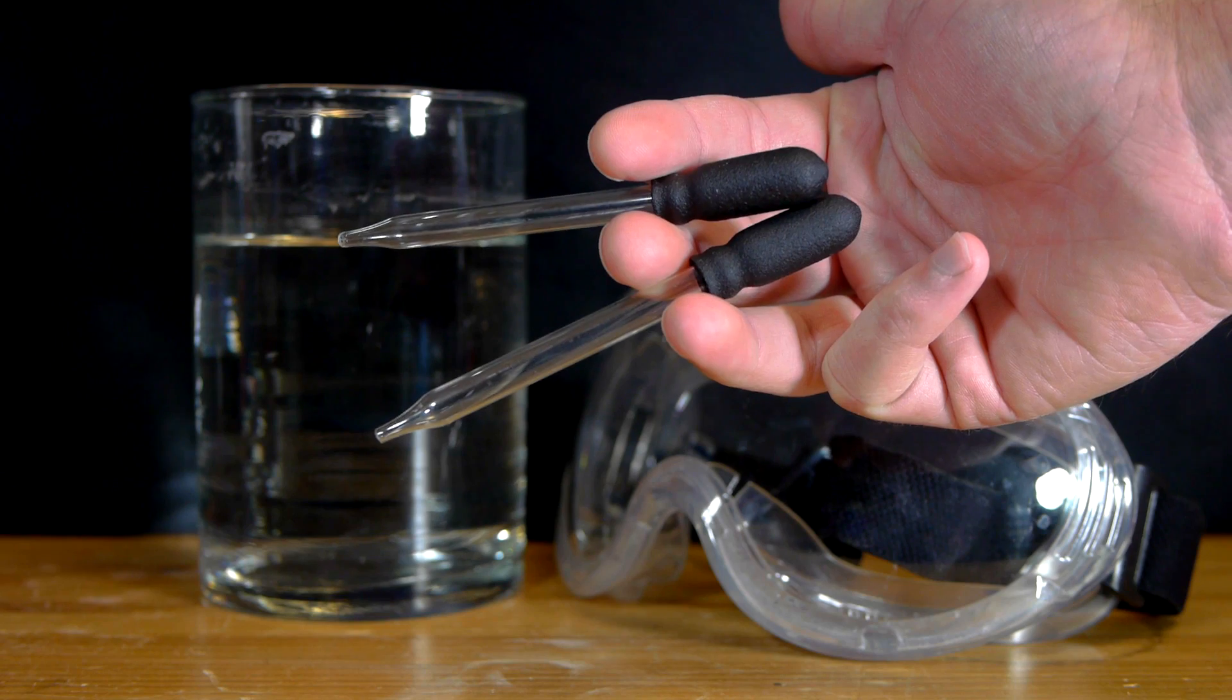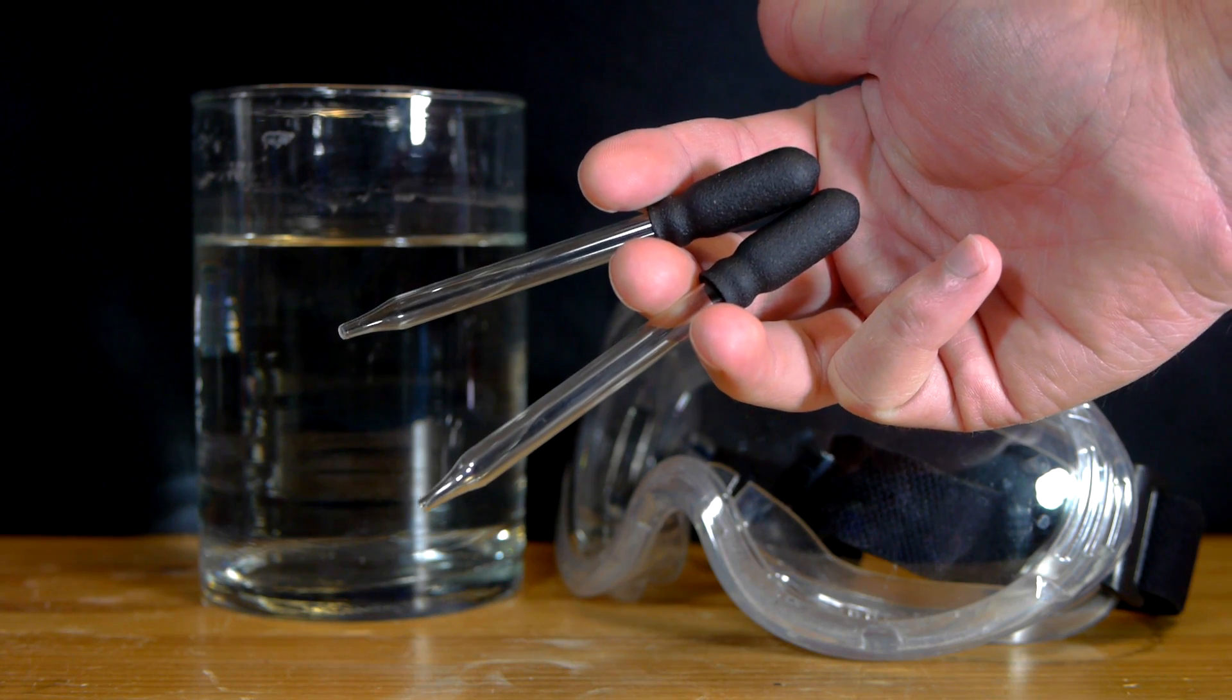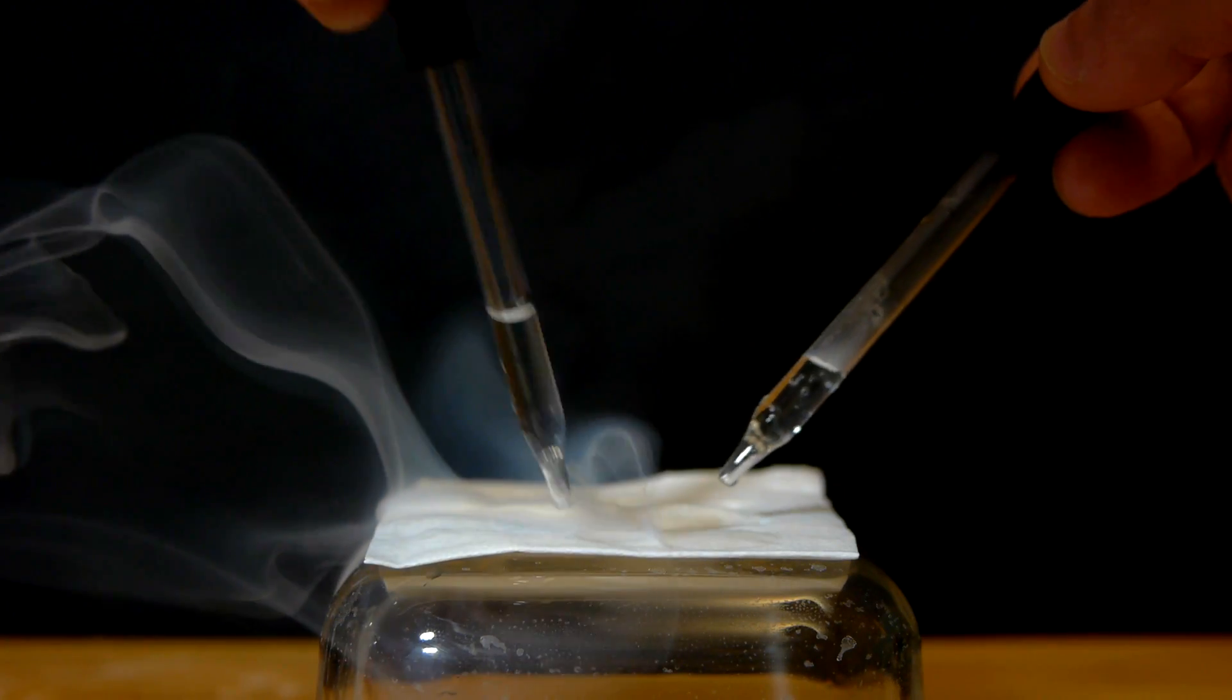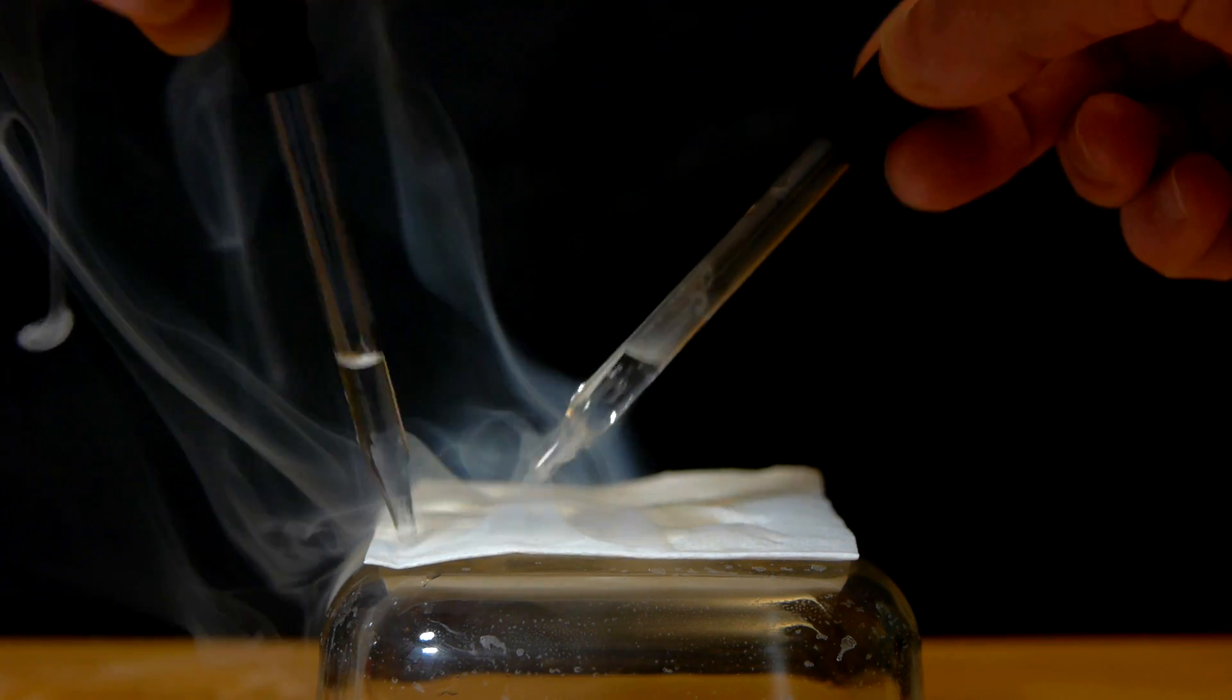I bought these medicine droppers to help safely move the ammonia and acid in small amounts. I found that a few drops of each on a napkin was the best way to produce a lot of smoke.